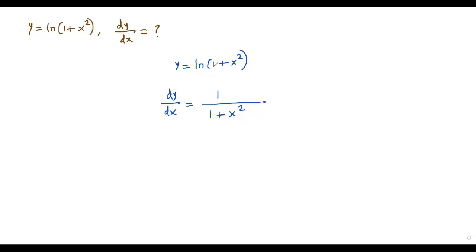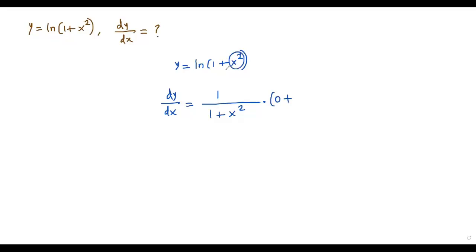By the chain rule, we have to further differentiate the argument 1 plus x squared with respect to x. The derivative of 1 becomes 0 because it's a constant. For x squared, we use the power rule: bring the exponent 2 in front of the variable and subtract 1 from the exponent, giving exponent 1. So the derivative is 2x.